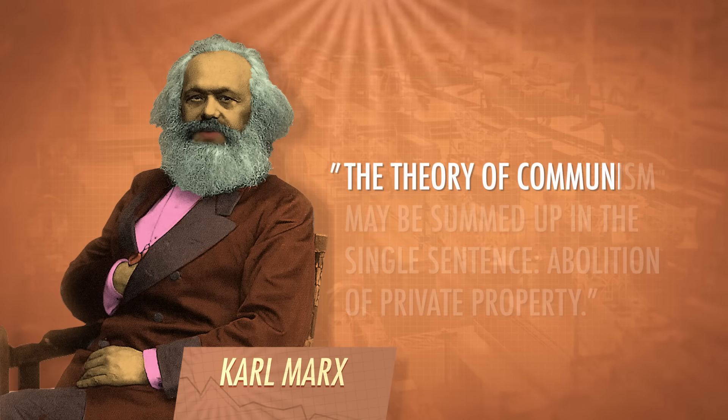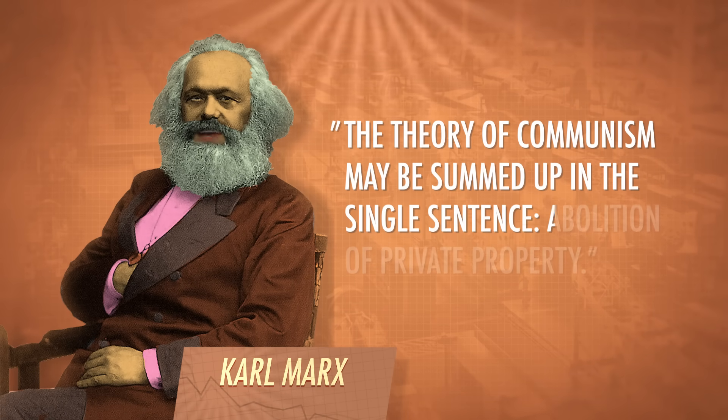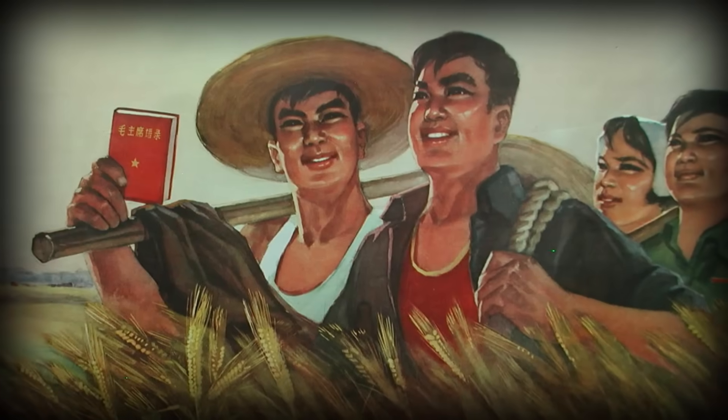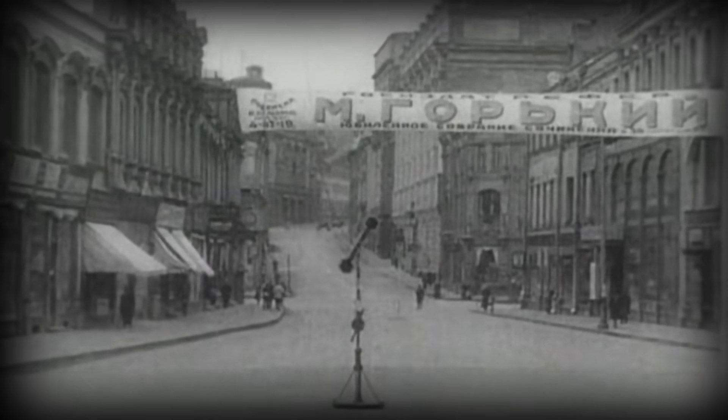He even wrote a book about it, Das Kapital. In a planned economy, the government controls the factors of production, and it's easy to assume that's the same thing as communism or socialism, but that's not quite right. According to Karl Marx, the theory of communism may be summed up in the single sentence: abolition of private property. True communism is a classless society — a social order where everyone owns the factors of production and output is distributed equally.